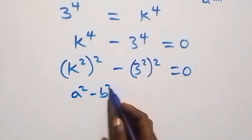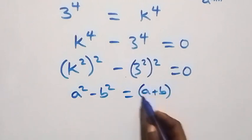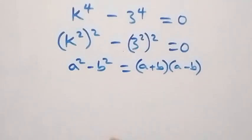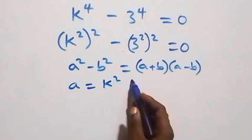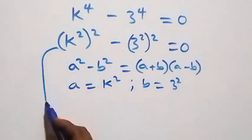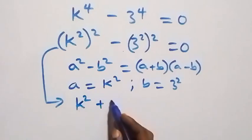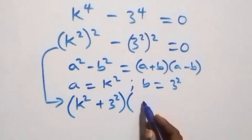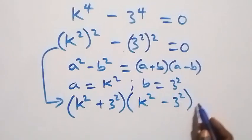This follows the difference of squares identity: a squared minus b squared equals open bracket a plus b close bracket into open bracket a minus b close bracket. Here, a stands as k squared and b stands as 3 squared. So this becomes: open bracket k squared plus 3 squared close bracket times open bracket k squared minus 3 squared close bracket equals zero.